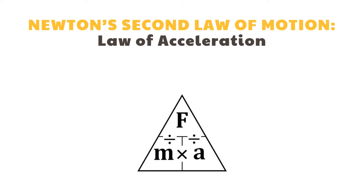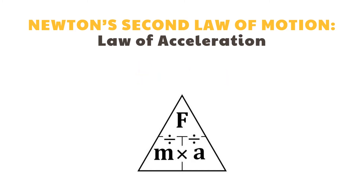We can summarize this law in this equation. Force is equal to mass times acceleration, where F is force, M is mass, and A is acceleration. Likewise, the acceleration of an object is equal to the sum of the forces acting on it, divided by the mass of the object.